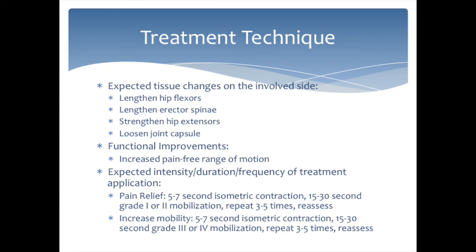Treatment application for pain relief is a 5–7 second isometric contraction of the hip extensors, followed by a 15–30 second grade 1 or grade 2 mobilization, carried out 3–5 times. The same procedure applies for increasing mobility, except a grade 3 or 4 mobilization should be utilized.